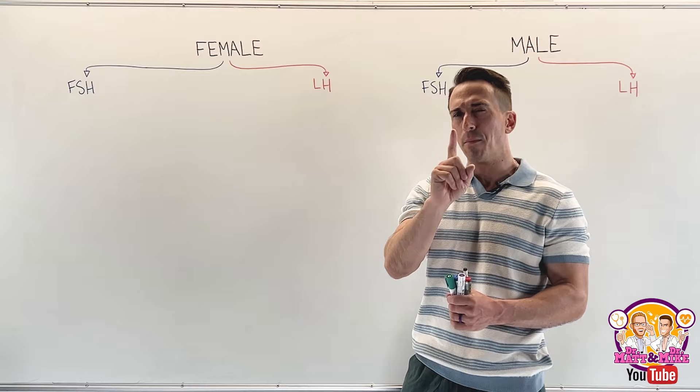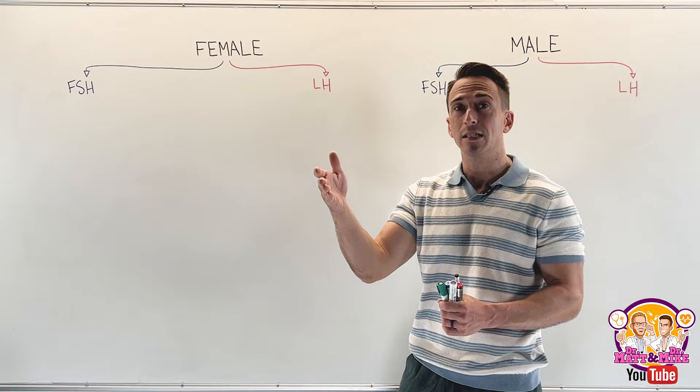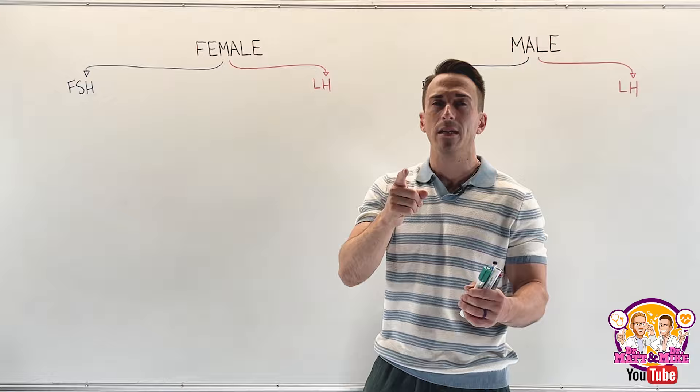Importantly, any hormone that doesn't have the suffix 'tropin' is likely going to be the end-stage hormone — it's not going to release any more hormones. That's a bit of a hint for future exams. Now let's start with the female reproductive system and the role that FSH and LH play.